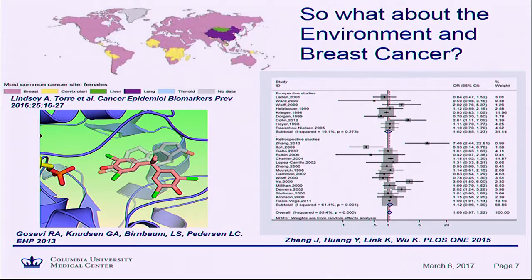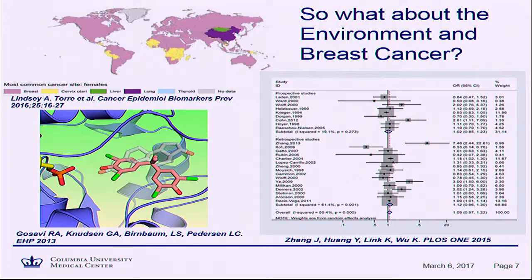So where are we with the environment in breast cancer? This paper published this past year shows the global map of breast cancer. Many know how common breast cancer is in North America and Australia, but now you can see worldwide — just the difference of 20 years — how widespread breast cancer is, and particularly early onset breast cancer. Lab data from Dr. Birnbaum's lab at NIH has looked at lots of environmental chemicals and supported endocrine disruption from certain chemicals.